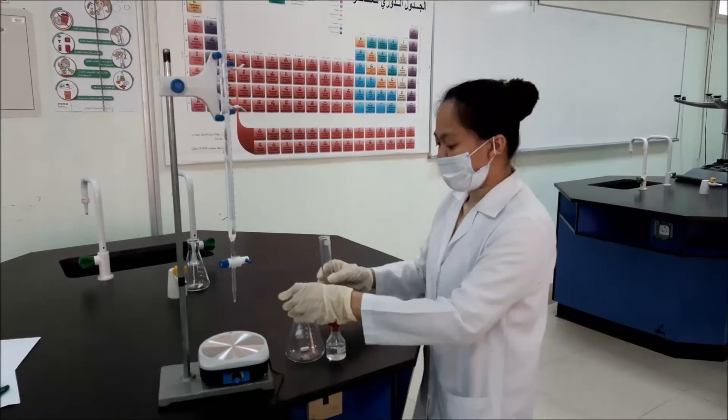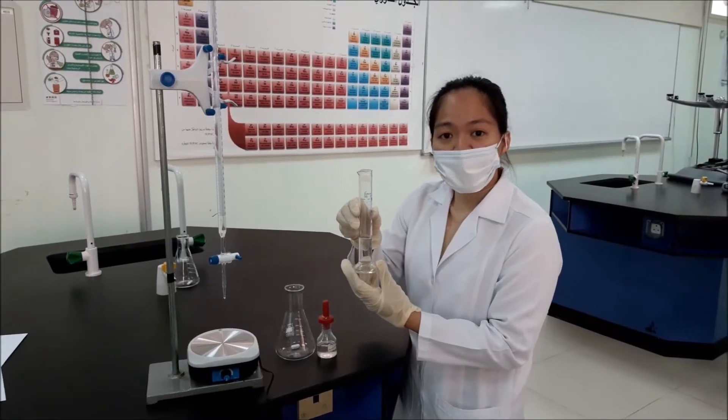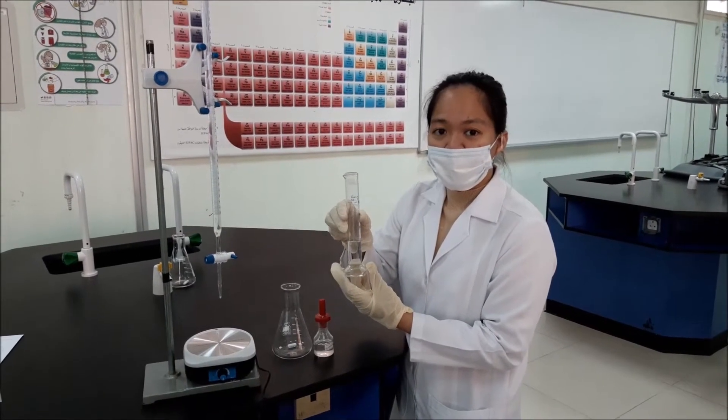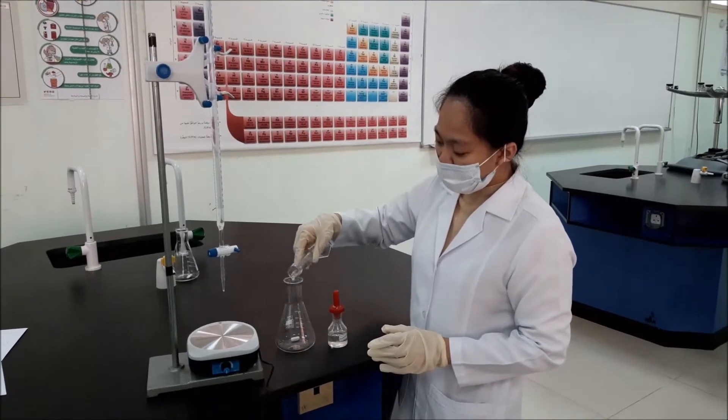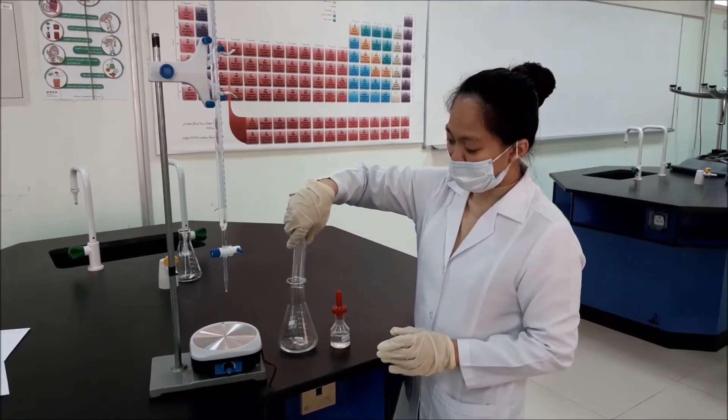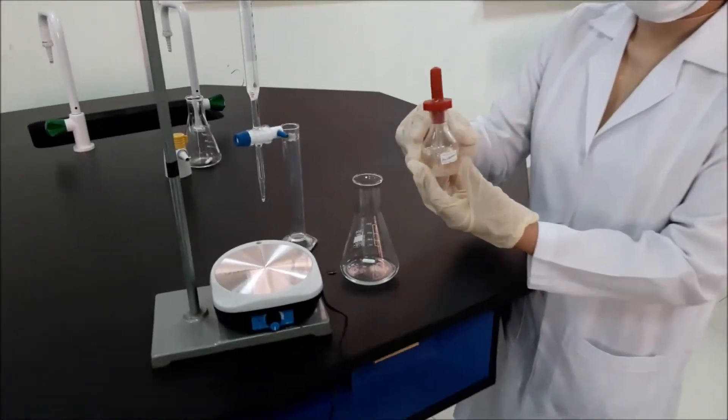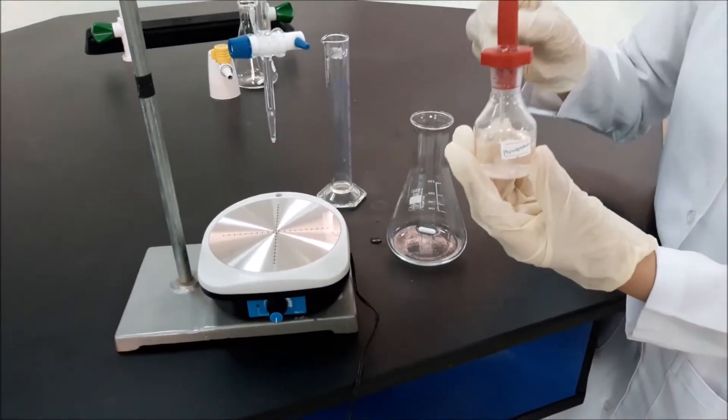And now, I measured 20 ml of acetic acid with unknown concentration. I will put it in the flask and put 3 drops of phenolphthalein.